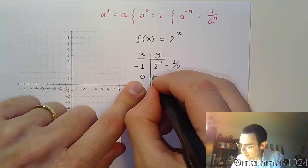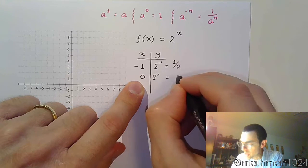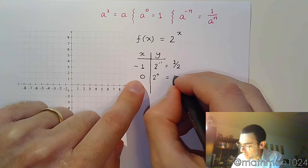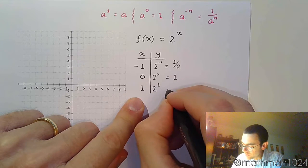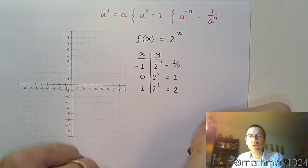If you plug in 0, 2 to the 0, well, we just got done reminding you that anything to the 0 power is 1. And if I plug in 1, I get 2 to the first, which of course is just 2.